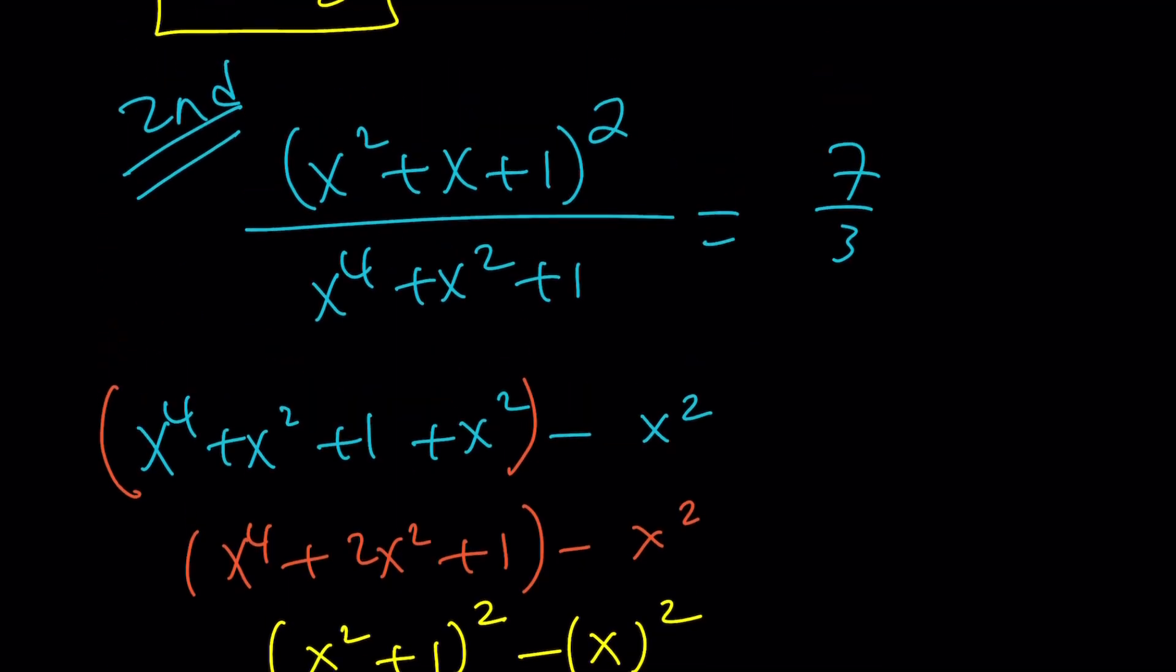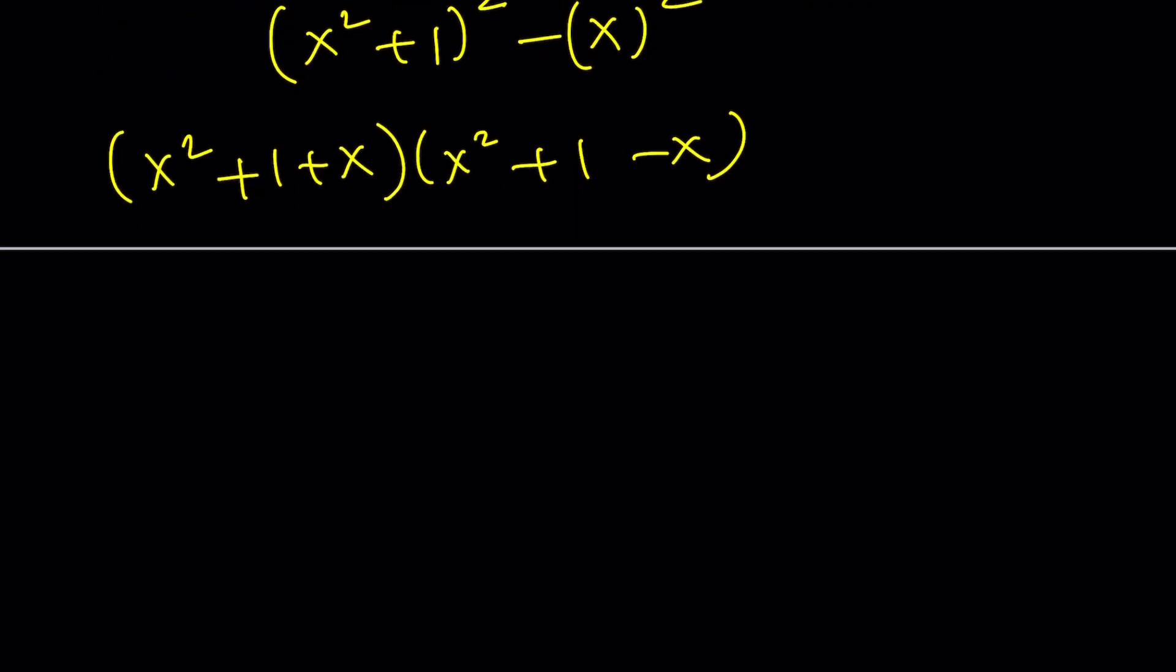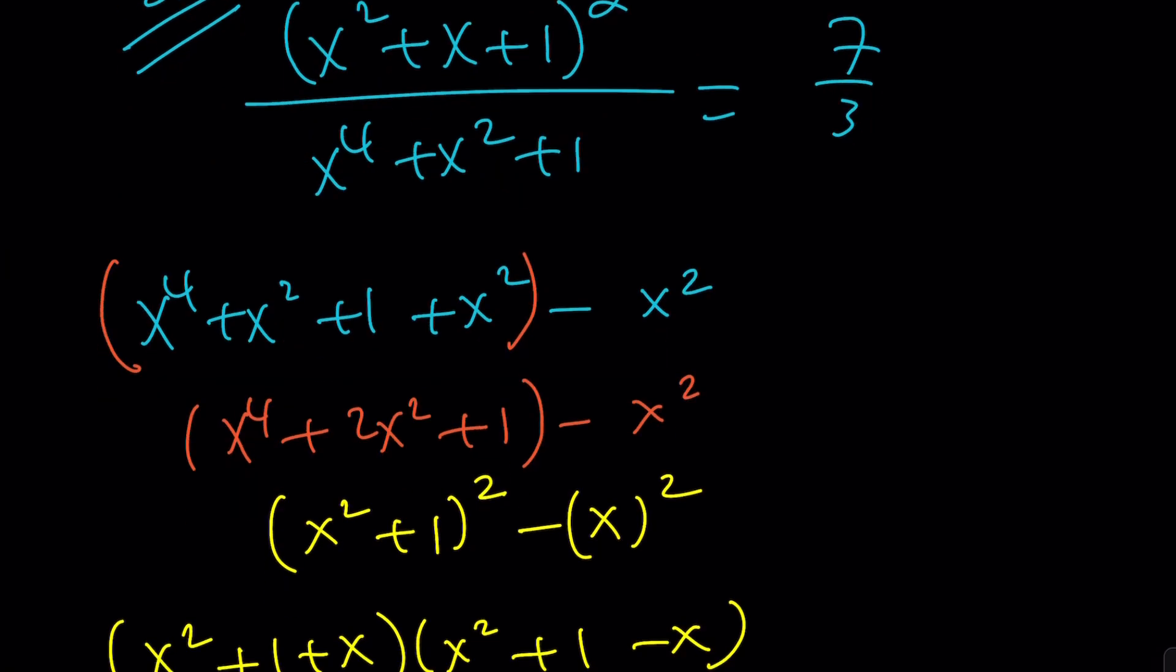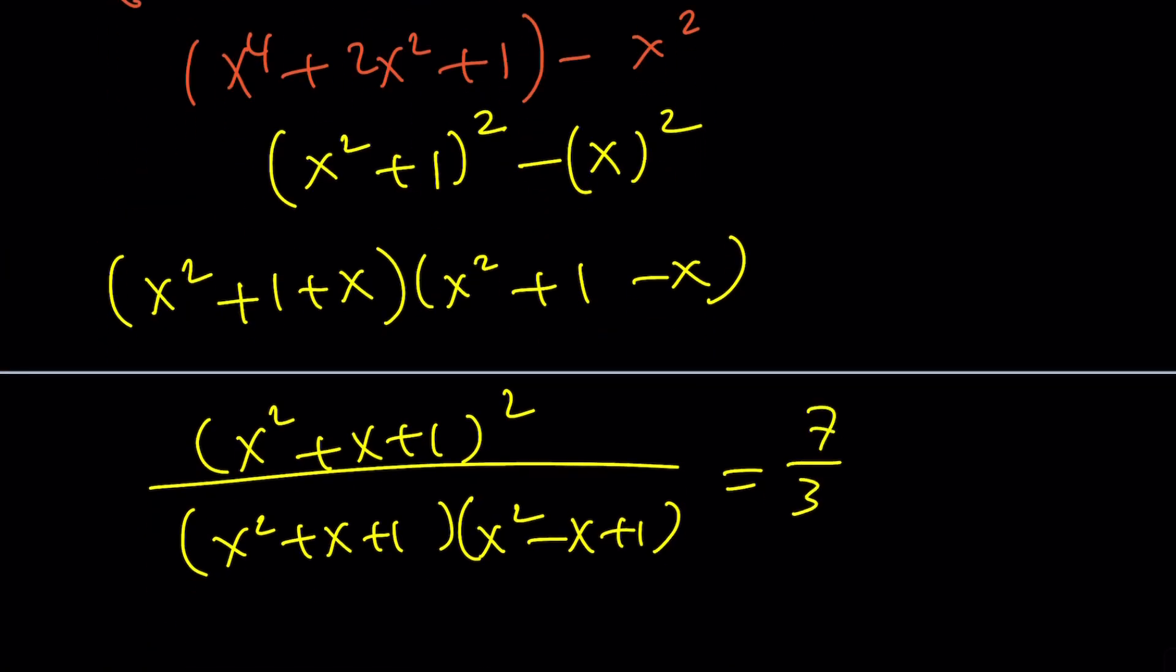Great. So the quartic at the bottom is factorable. Let's go ahead and do it. So we have x squared plus x plus 1 squared divided by x squared plus x plus 1 times x squared minus x plus 1, and this is equal to 7 thirds. And now one of these will cancel out. And guess what? We're going to end up with a quadratic.